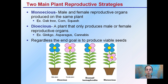There are two main types of reproductive strategies. There's monoecious, where male and female reproductive organs are produced on the same plant — this is common in oak trees, corn, and squash plants. And there's dioecious, where a plant only produces male or female reproductive organs, which is found in ginkgoes, asparagus, and also cannabis.